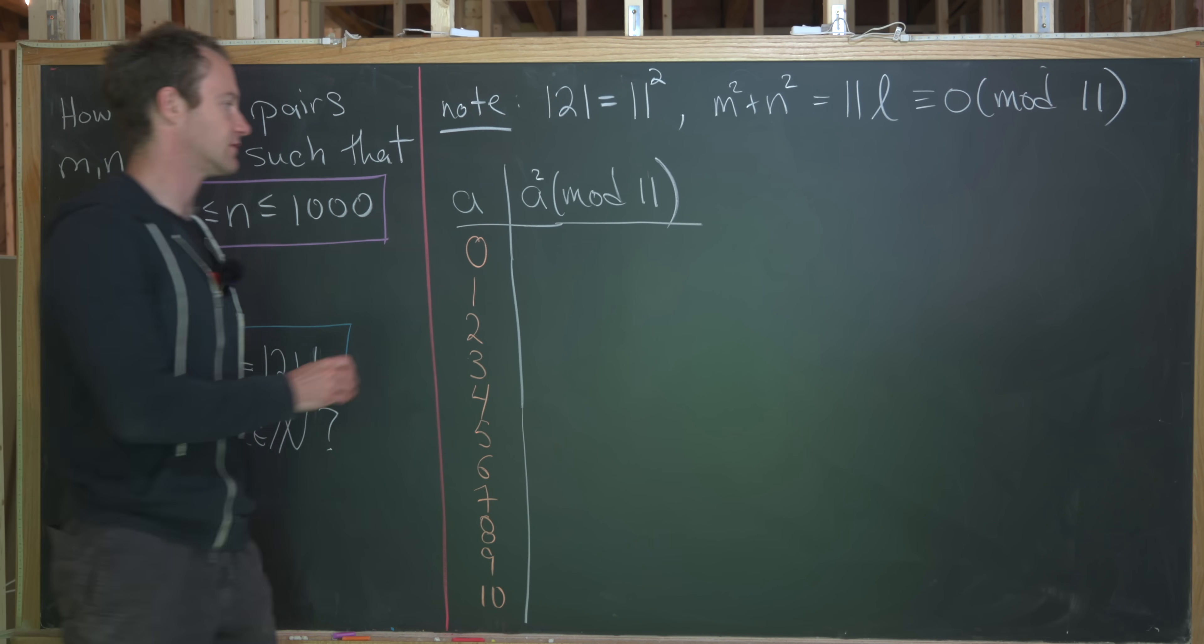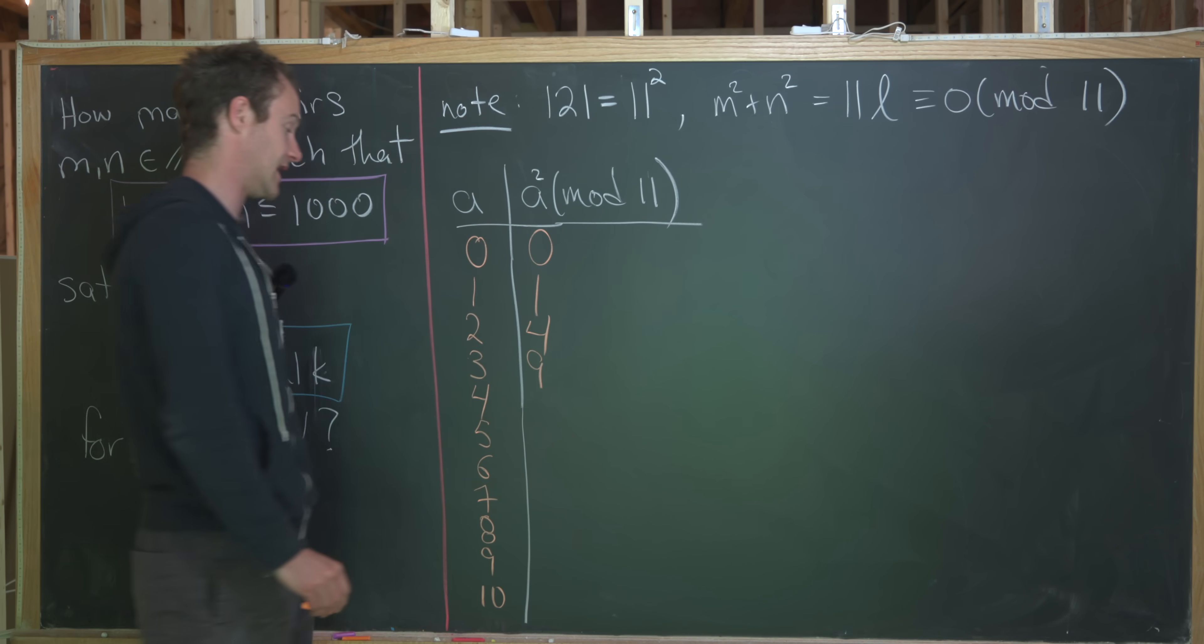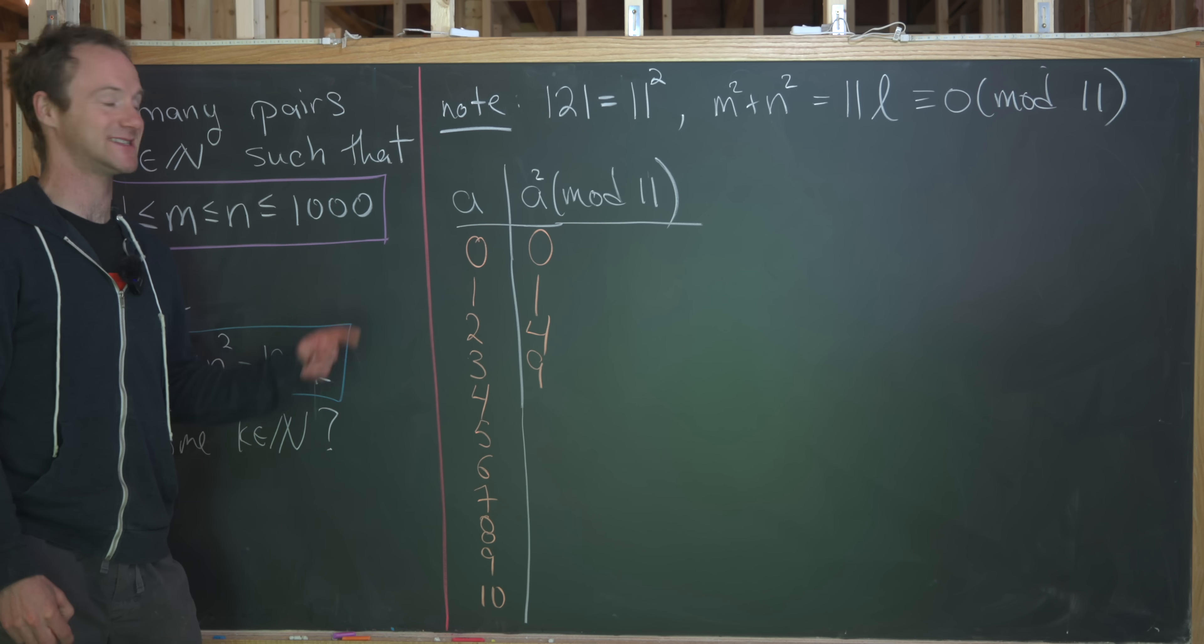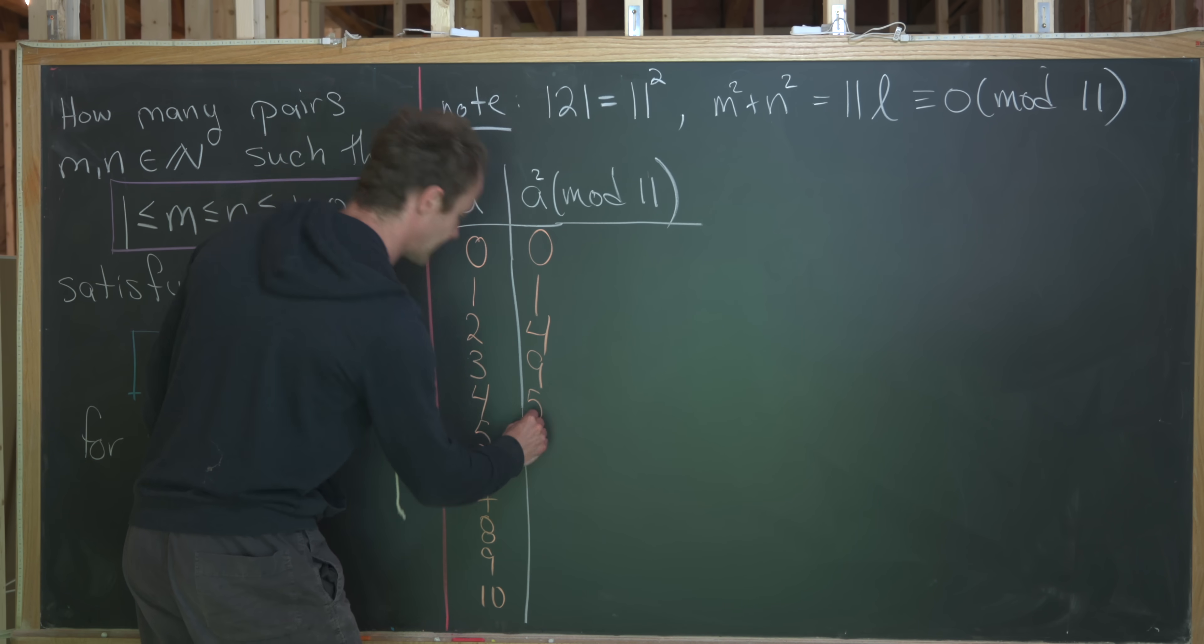Okay, so notice if we square 0, we clearly get 0. If we square 1, we're going to get 1. If we square 2, we'll get 4. 3, we'll get 9. If we square 4, we will get 16. But reducing that mod 11, we'll get 5.